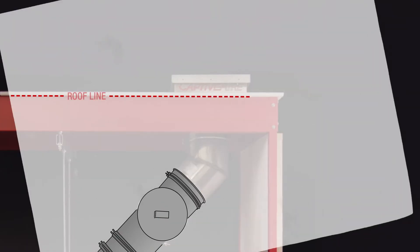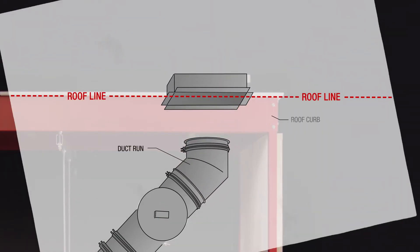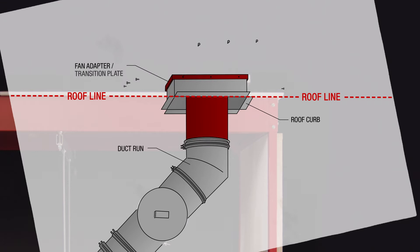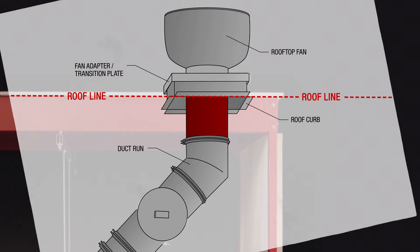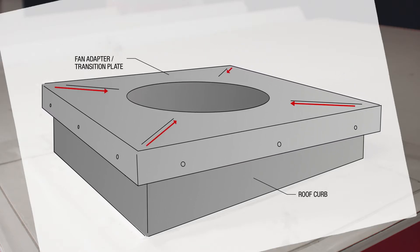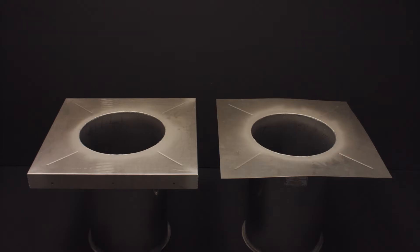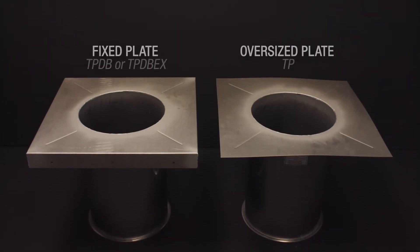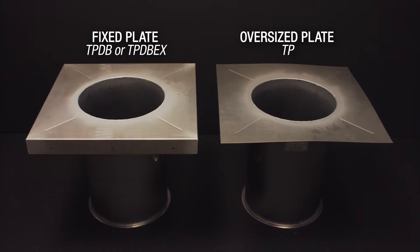The fan adapter plate, or transition plate, is designed to connect to a previously installed roof curb. When connected, the plate mounts on top of the fan curb, which supports the fan housing. The adapter plate is formed to provide a slope, allowing grease deposits to flow back into the duct. There are two categories of transition plates, either fixed or oversized.